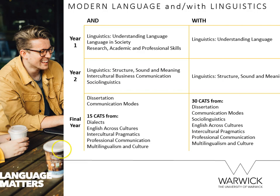You can see here the module framework for modern language and linguistics on the left, and modern language with linguistics on the right. The core module they share in common in year one is 'Linguistics: Understanding Language,' which is an overview of phonetics, phonology, morphology, and syntax — the rank scale and structure of language. We then go beyond that to look at semantics, the meaning of words and how that can shift across time, and pragmatics — language in use — so how people from different cultures or social classes might communicate differently, and how it might affect communication if one is an L2, a second language speaker.